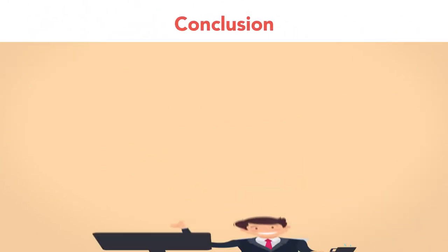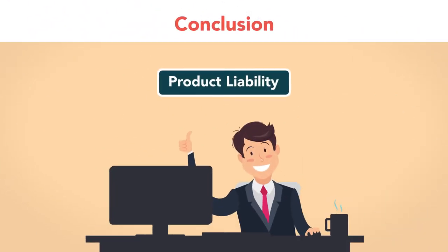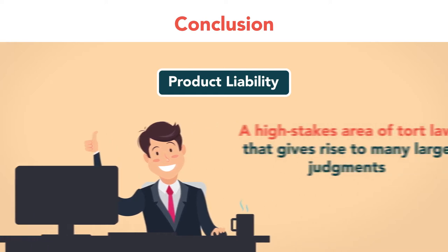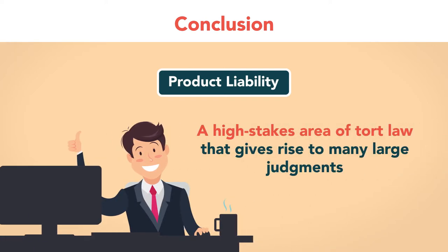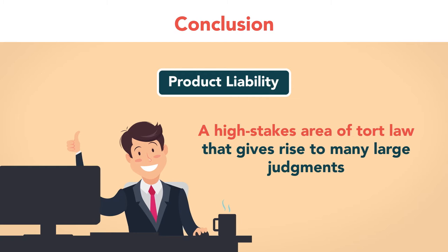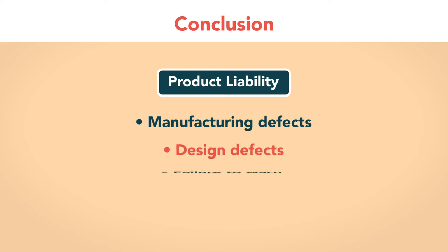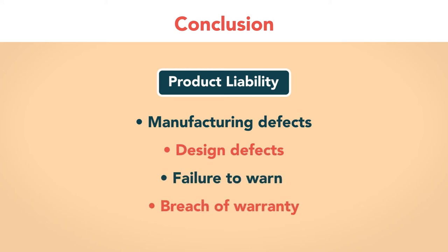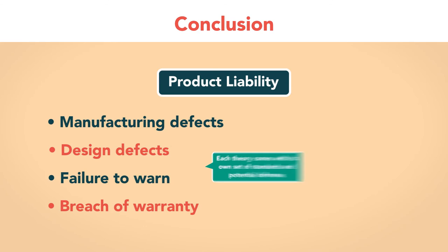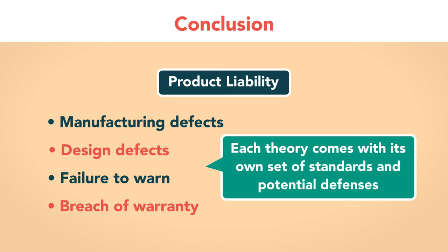Thank you for listening to our course on product liability. Product liability is a high-stakes area of tort law that gives rise to many large judgments. It is broken down to actions on four theories – manufacturing defects, design defects, failure to warn, and breach of warranty. As we have seen, each theory comes with its own set of standards and potential defenses. Best of luck, and please contact us with any questions or feedback.